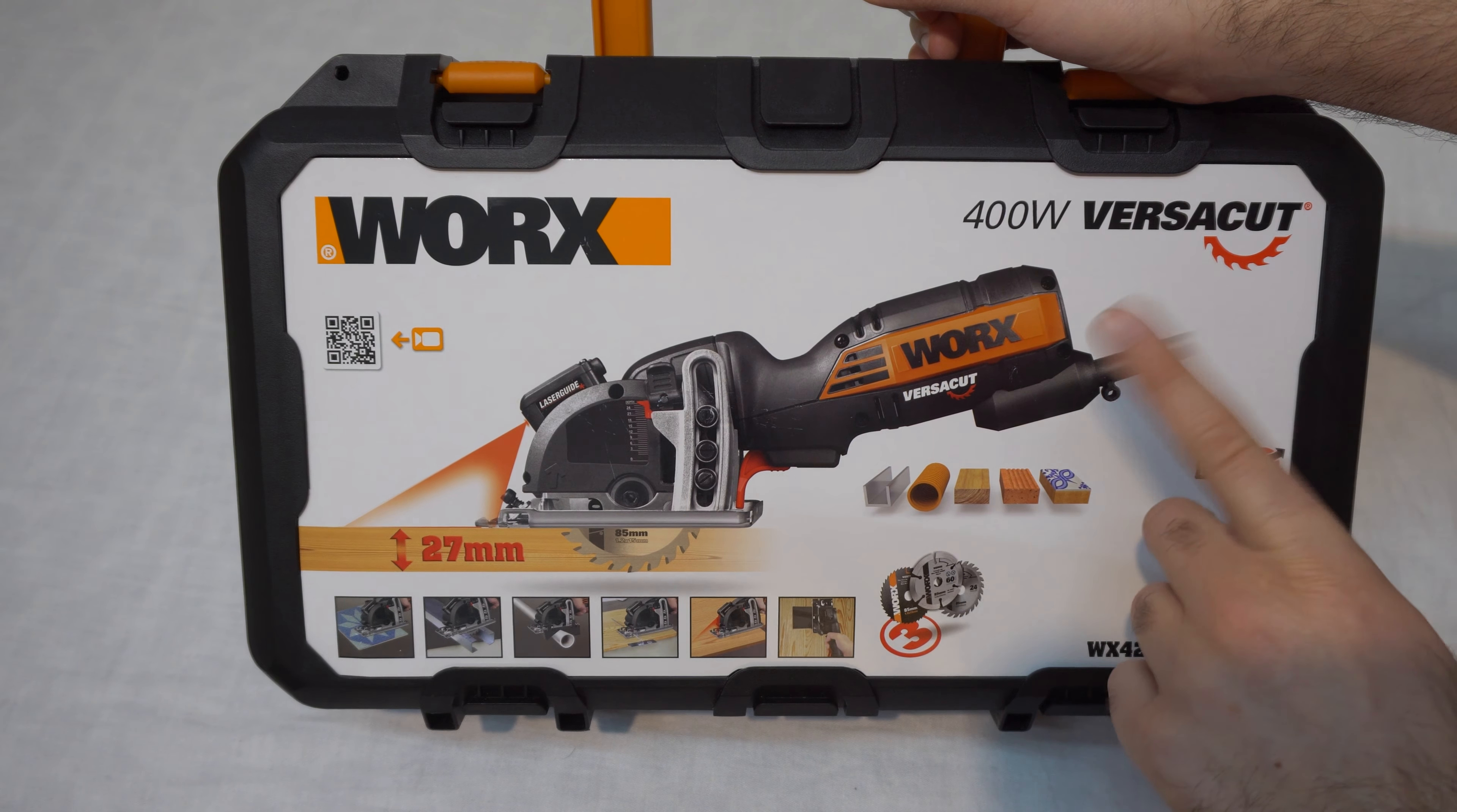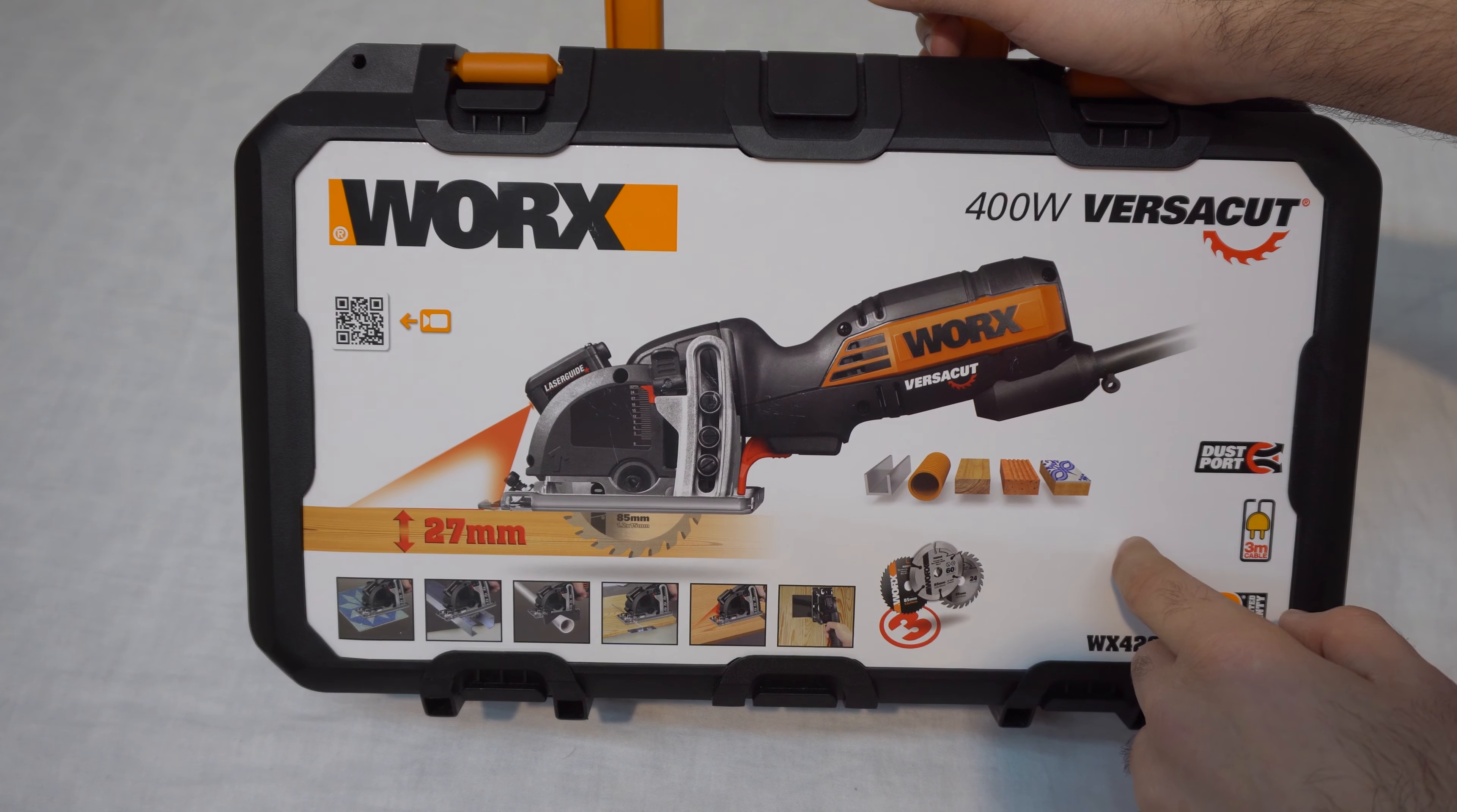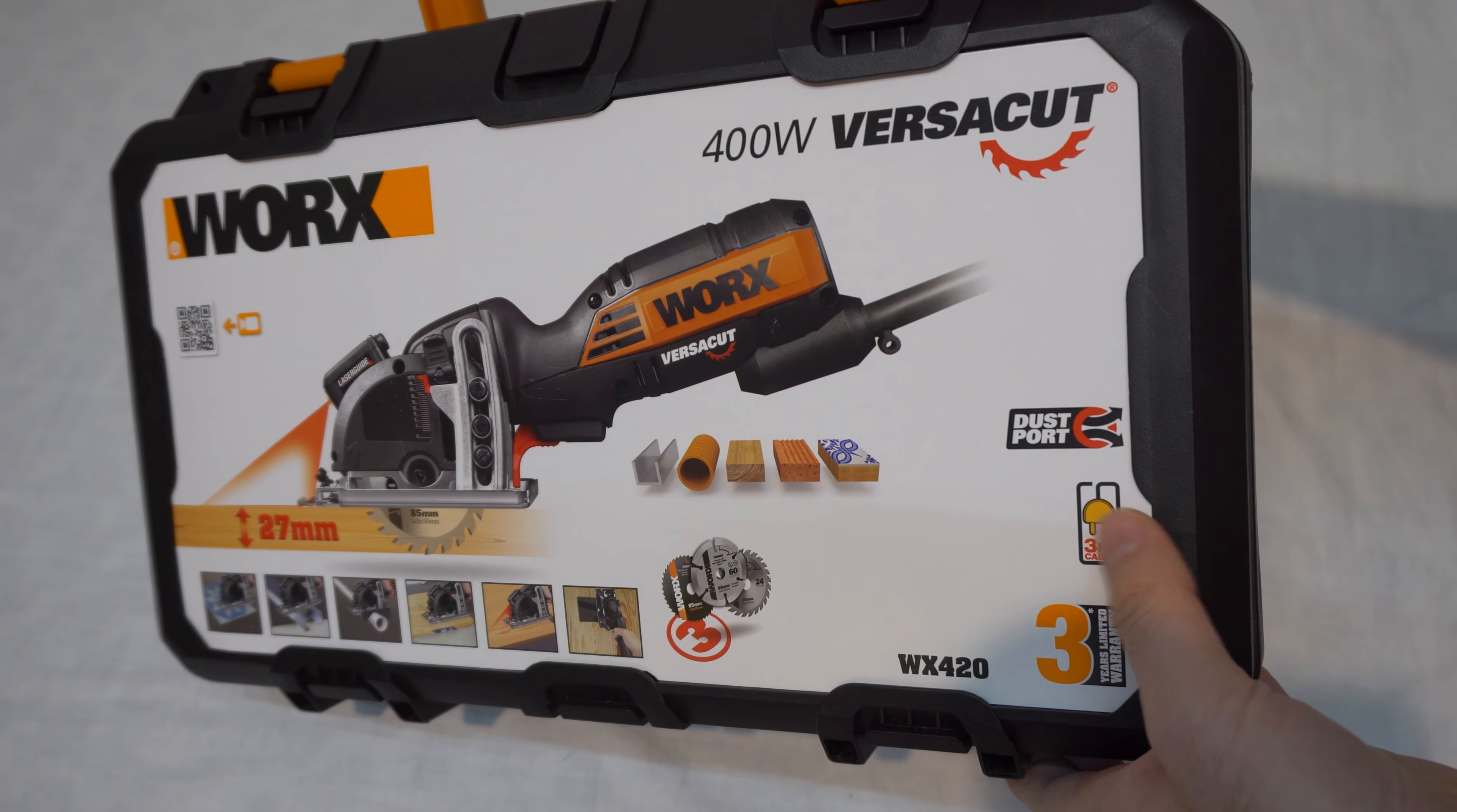It's corded, so there are no batteries. It has three cutting blades. It can cut metal, plastics, wood, and ceramics. It has a dust port for the vacuum cleaner. Three meters is the length of the cable.